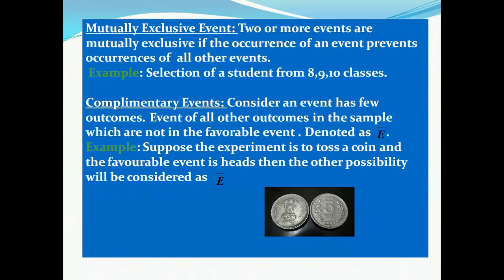Mutually exclusive: two or more events are mutually exclusive if the occurrence of one event prevents the occurrence of all other events. For example, if there is a selection from classes 8, 9, and 10 and a student is selected, that student cannot be selected again. So the occurrence of one event is preventing the other. This is a mutually exclusive event.